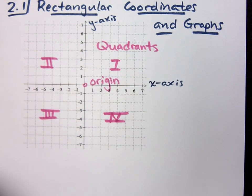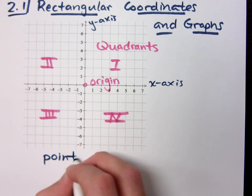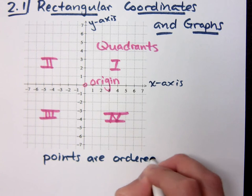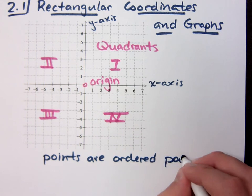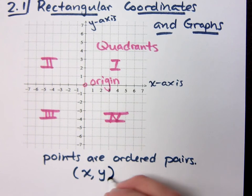Whenever we plot points, we plot them as ordered pairs. So remember the points. Points are ordered pairs. Remember that? They come in this form, x and then y.